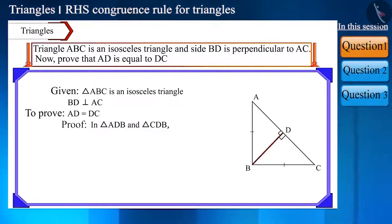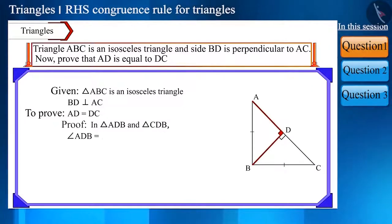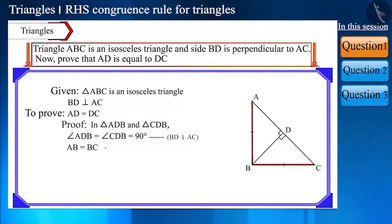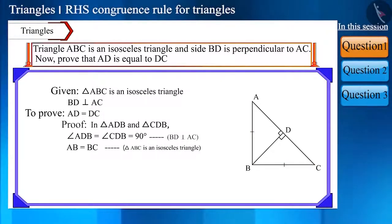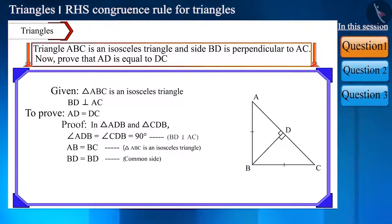Since side BD is perpendicular to side AC, in triangle ADB and triangle CDB, angle ADB is equal to angle CDB, which is equal to 90 degrees. Triangle ABC is an isosceles triangle, so side AB is equal to side BC. Therefore, in both these triangles, the hypotenuse will be equal. And side BD is the common side in these two triangles.